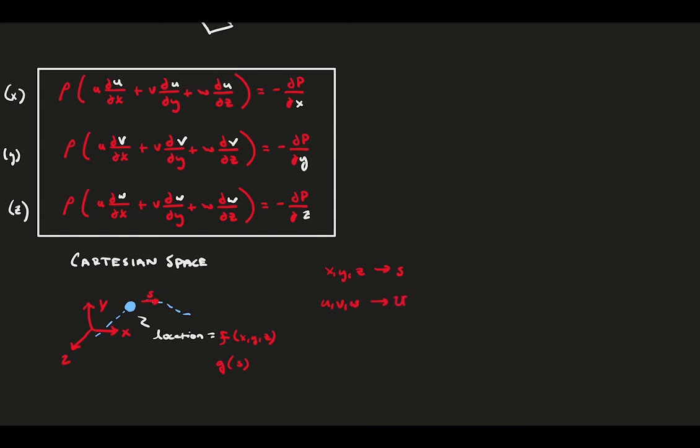Also, we'll consider the velocity as a single parameter, because, by definition, the velocity is always tangent to our streamline, so there is always a single total velocity component.